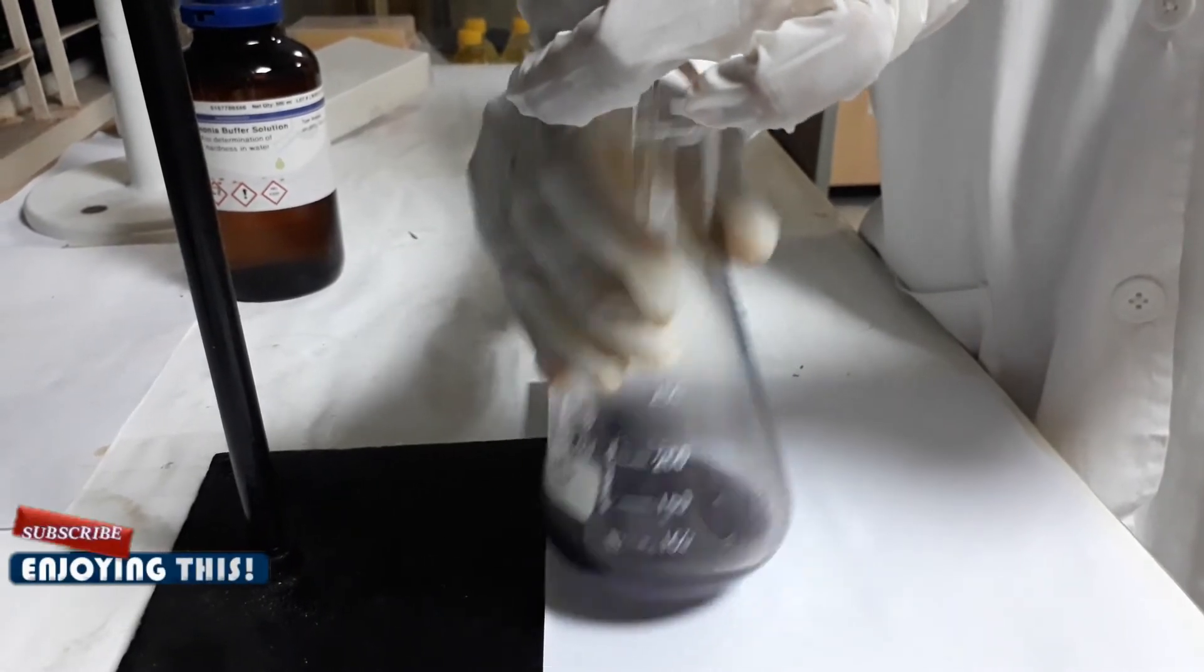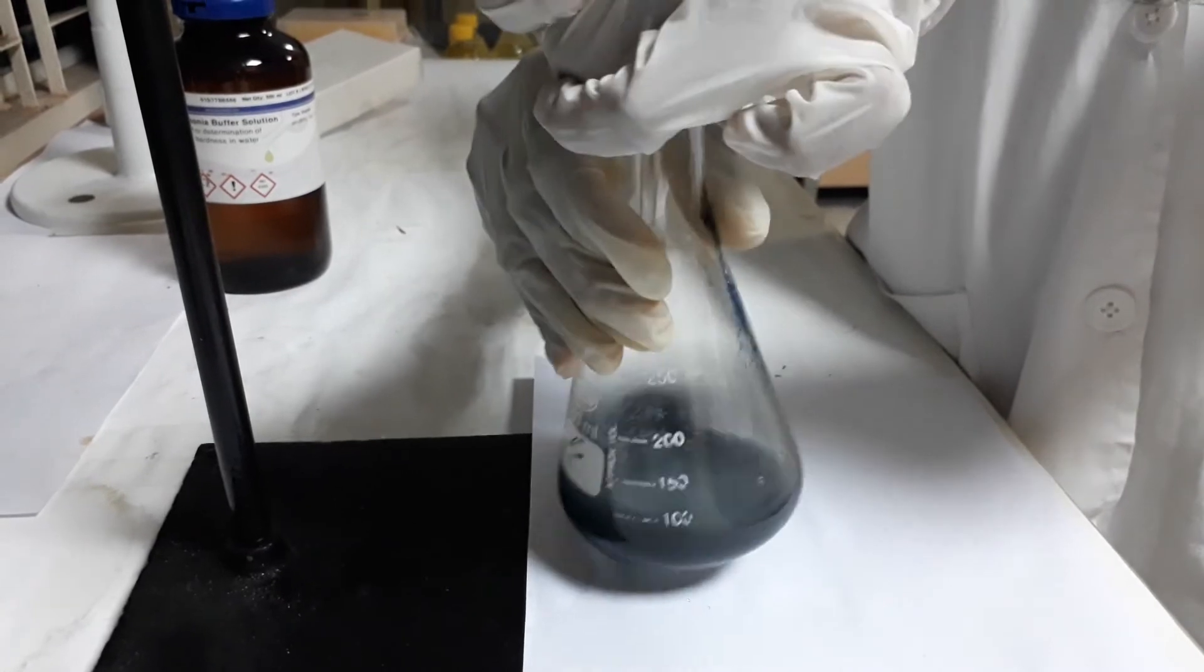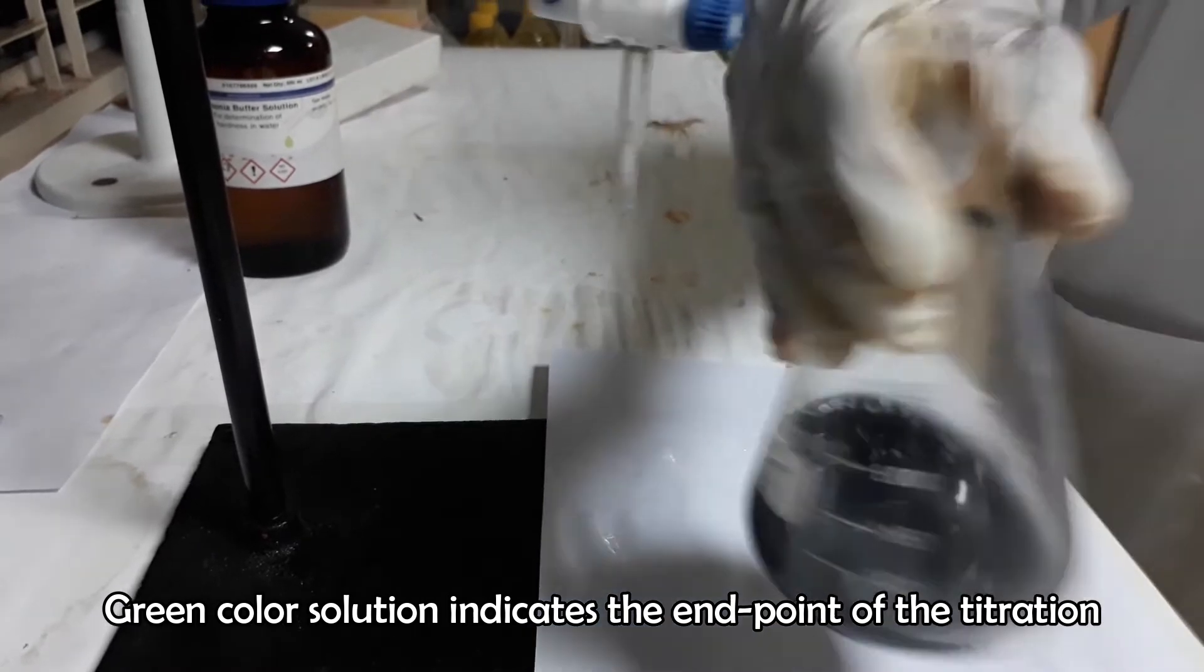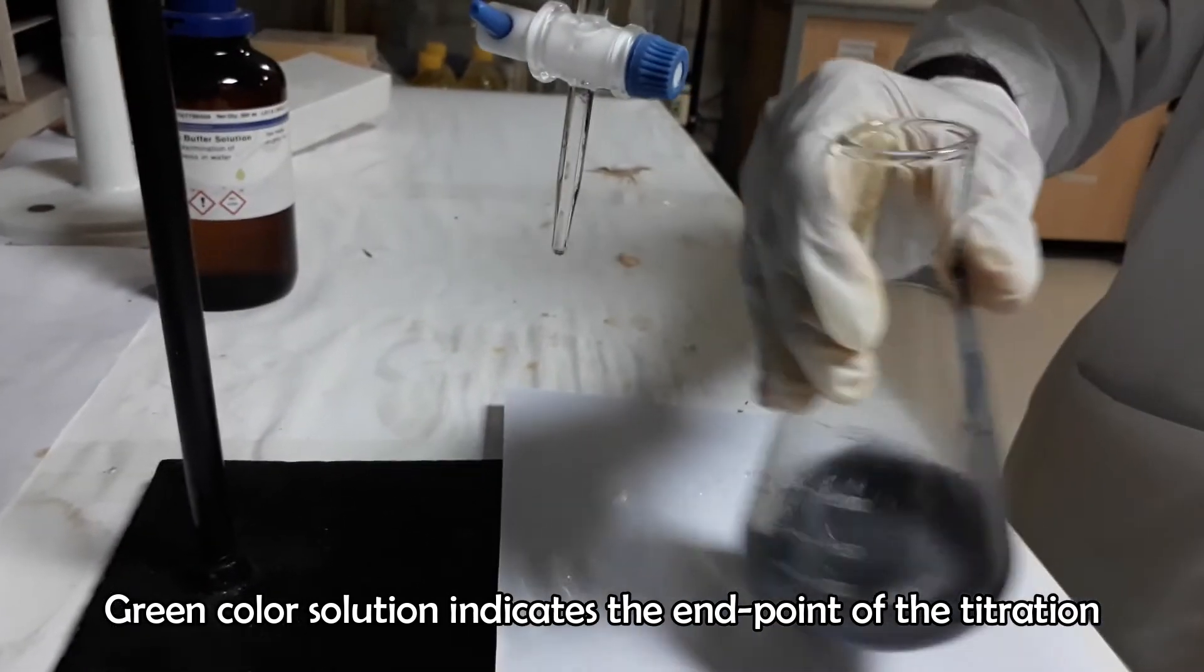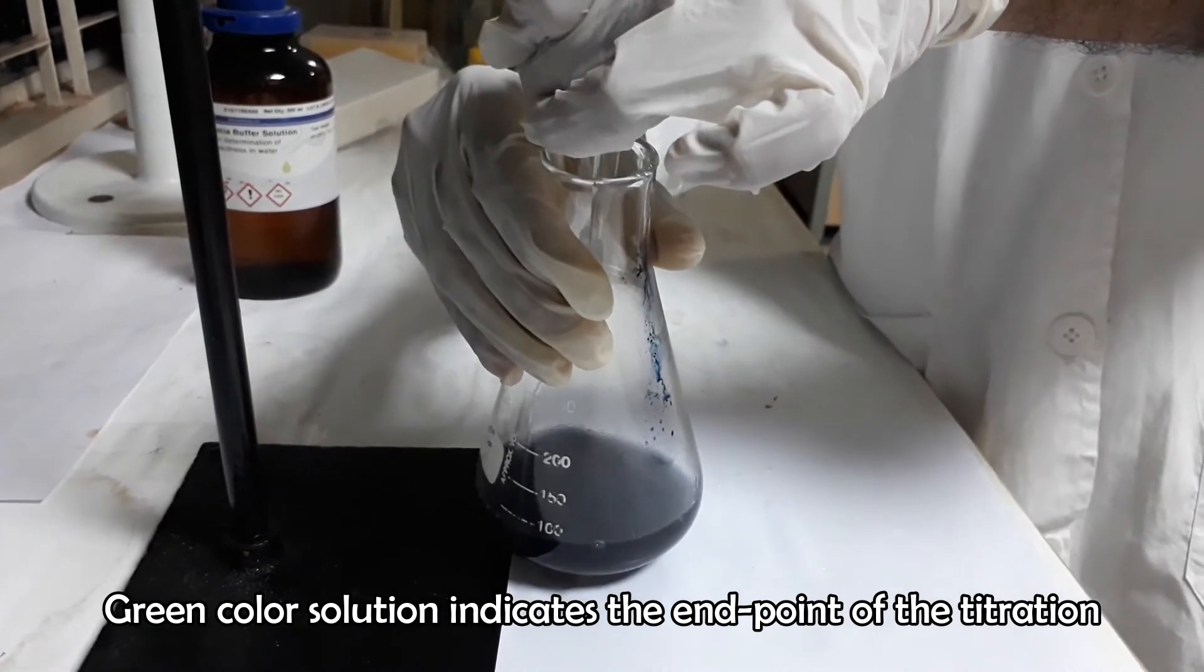Titration should be carried out with vigorous agitation of the flask to get accurate results. Stop the titration when the solution color changes to green. Shake the flask vigorously to ensure the permanent green color solution. Resume titration again if the violet or purple color comes back.